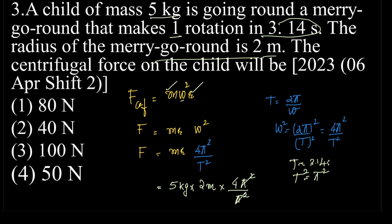Now, π² by π² is 1, 5 into 2 is 4... sorry, 5 into 2 is 10, 10 into 4 is 40. So the answer is 40 Newton, which means option 2. The correct option is option 2.